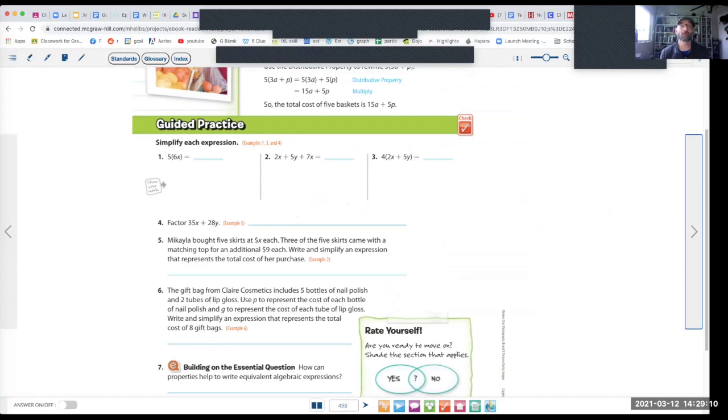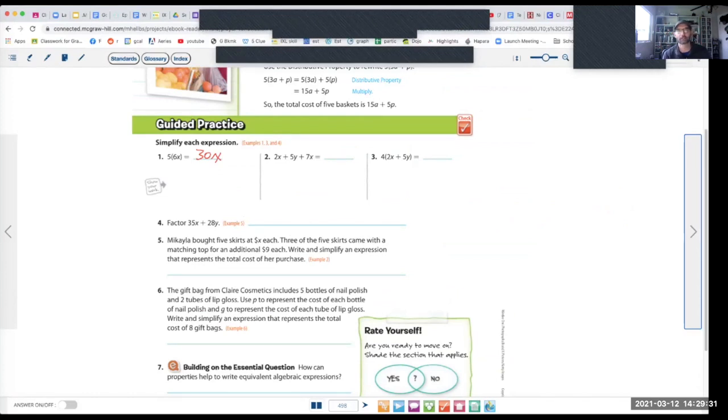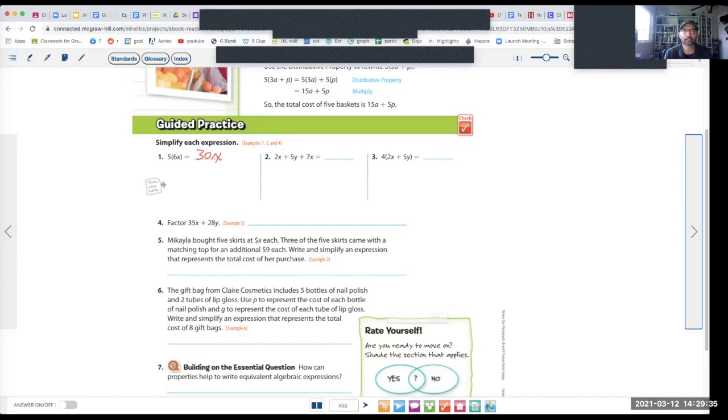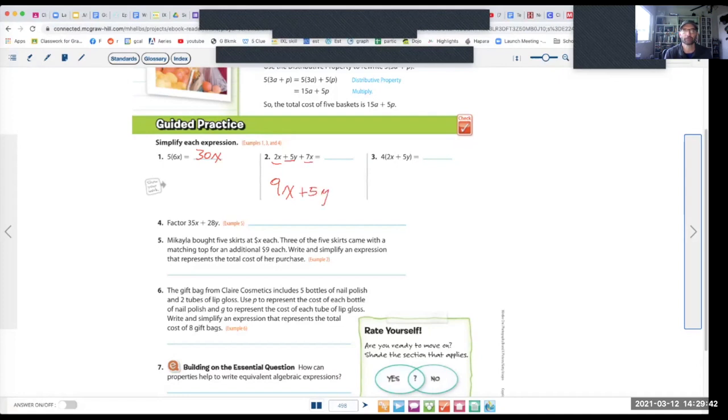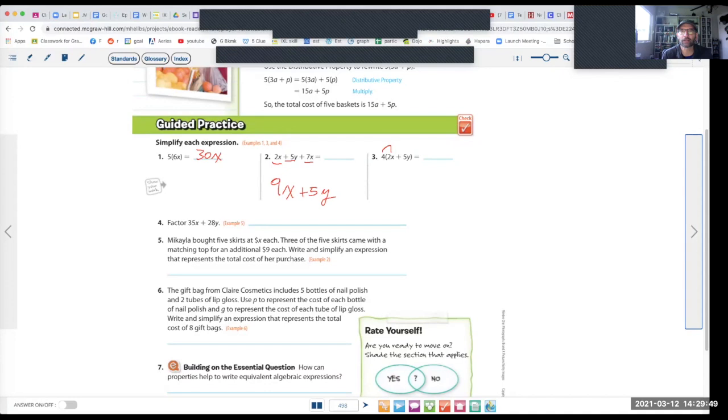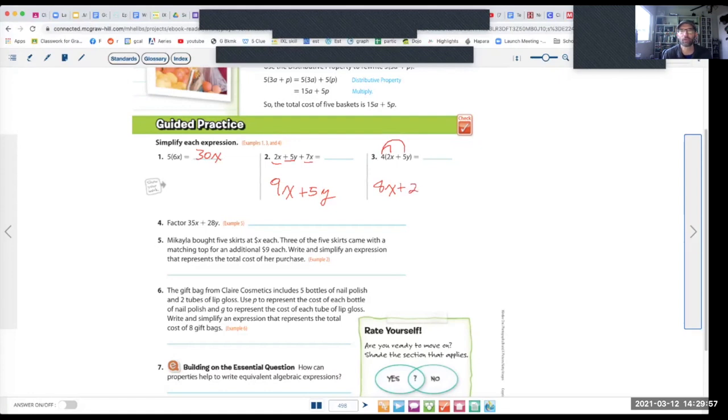All right, so now we're on page 498. And we're going to do the guided practice. And let's try number 1. Remember when it says 5 quantity 6x, this means 5 times 6x. Ready? Go. All right, this one should be pretty easy. 5 times 6 is 30, and the x just stays there, so it's 30x. Okay, now let's try number 2. Combine these like terms. Ready? Go. All right, so you have a 2x and a 7x. That means add them together. And it's 9x, and the plus 5y just stays plus 5y. And let's do number 3. Ready? Go. All right, so this is 4 times 2 is 8, and the x just stays x. And then you do 4 times 5 plus 4 times 5 is 20. And don't forget, you have to have the y in there. Great.